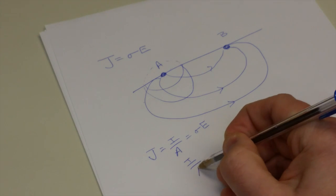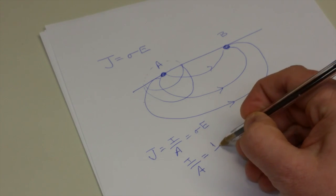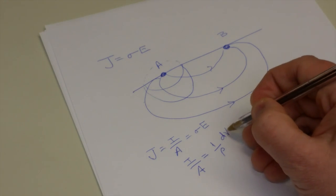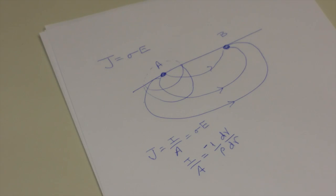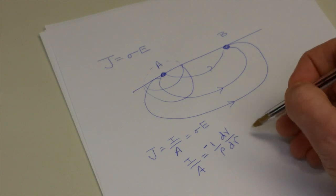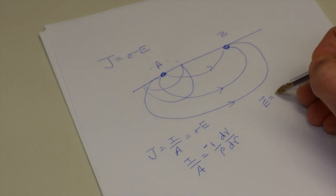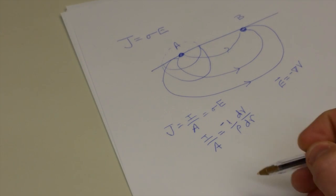So we're going to have I over A is equal to writing the conductivity as the inverse of the resistivity. And now writing E not as V over L, but as a derivative dV/dr. And there's a minus sign that goes in here. You may recognize this dV/dr as simply the expression that the field is equal to the negative gradient of the potential. And here we have an expression from which we can derive V. This is a simple differential equation that integrates very readily.